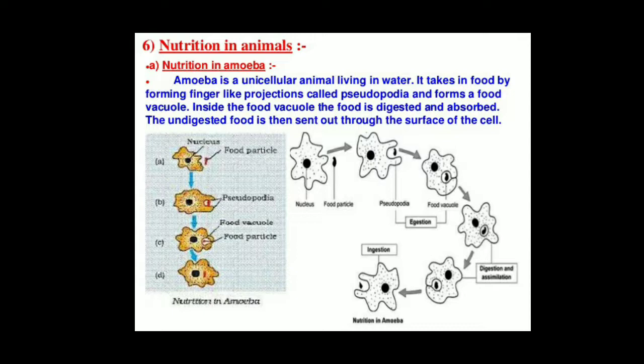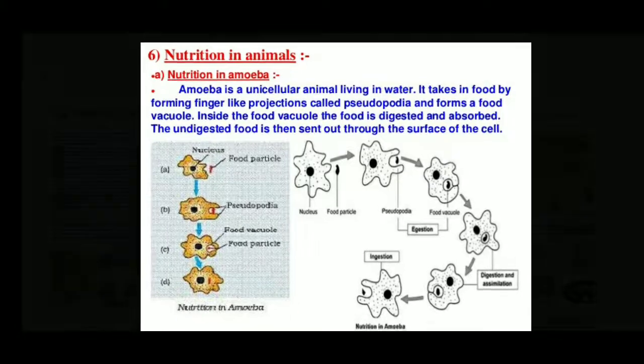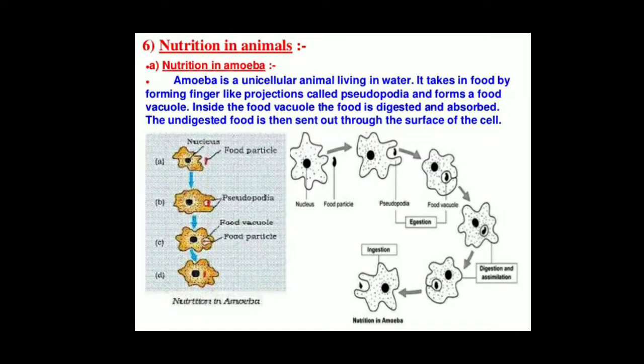In the diagram you can see: first, the amoeba with a food particle in the environment; second, the formation of the finger-like projection called pseudopodia; then the food entering into the food vacuole; followed by the process of digestion and assimilation; and finally the removal of waste products.